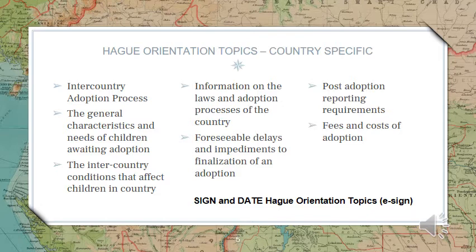Children awaiting adoption in Taiwan reside in institutions or with foster families. Although these homes are a significant improvement for many of the children, they do not measure up to the level of care a child would receive in a family environment. Any time a child is in less than optimal care, they are at risk for malnourishment, delays in any or all areas of development, unhealthy living conditions, sickness, and abuse that may include emotional, physical, and or sexual abuse. These children all have trauma in their backgrounds from abandonment, inconsistent caregiving, and substandard care. This is why parent education is an important part of the adoption process to help you prepare for your child's needs when they come home.